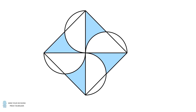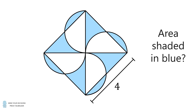Then shade the region that's exterior to the square but interior to the semicircles in blue. The question is: if the side of the square has a length equal to four, what is the area of the region shaded in blue?